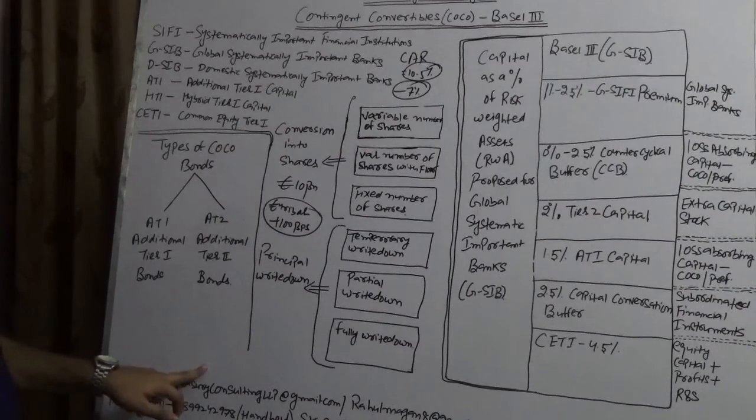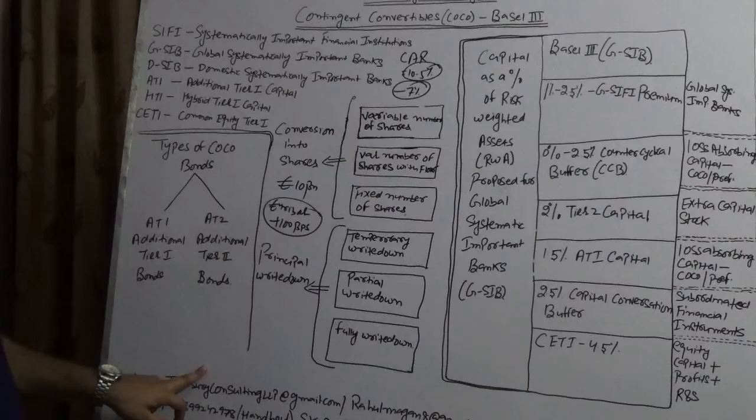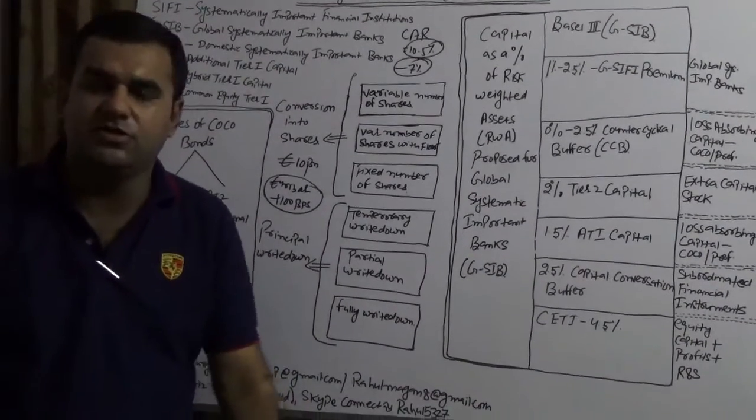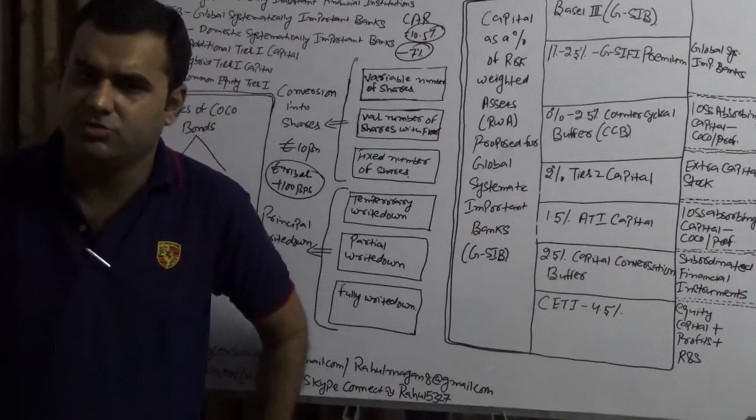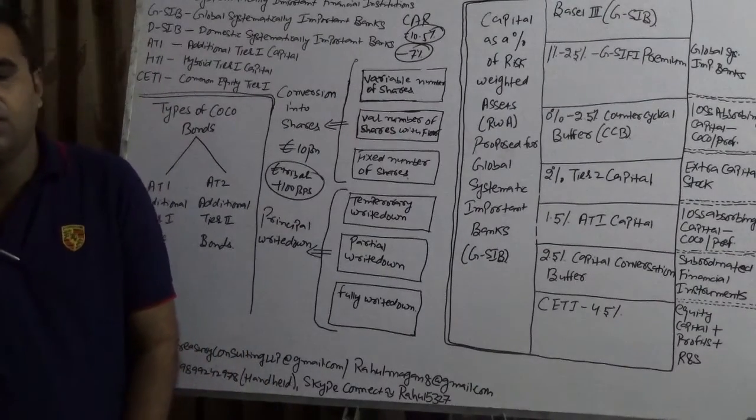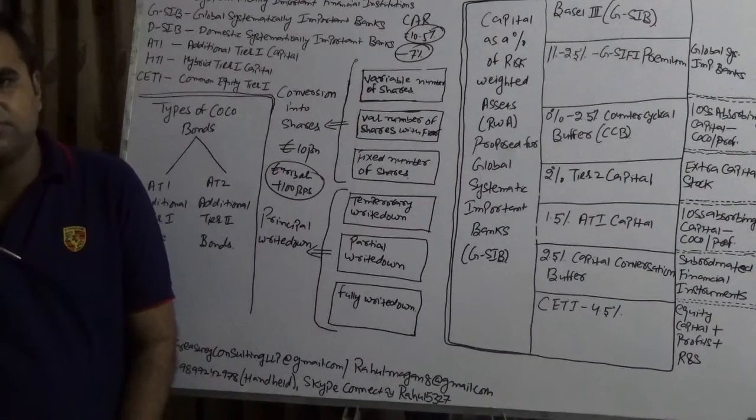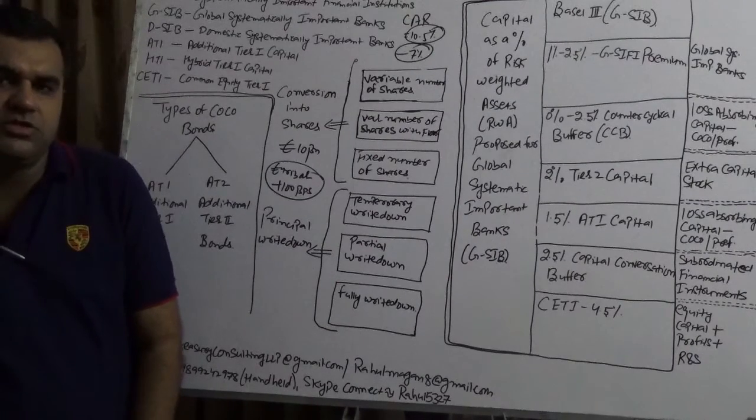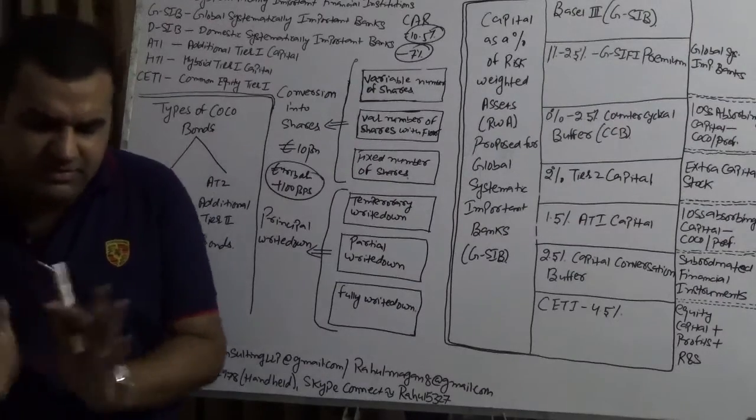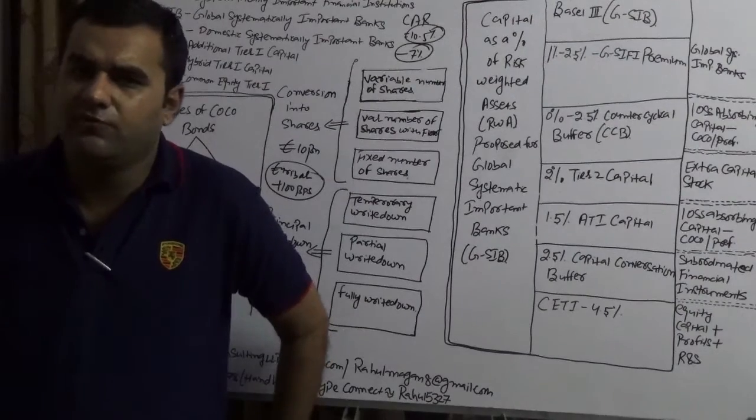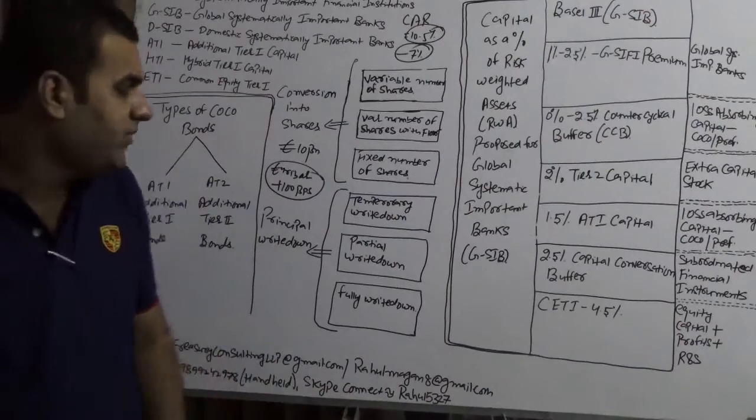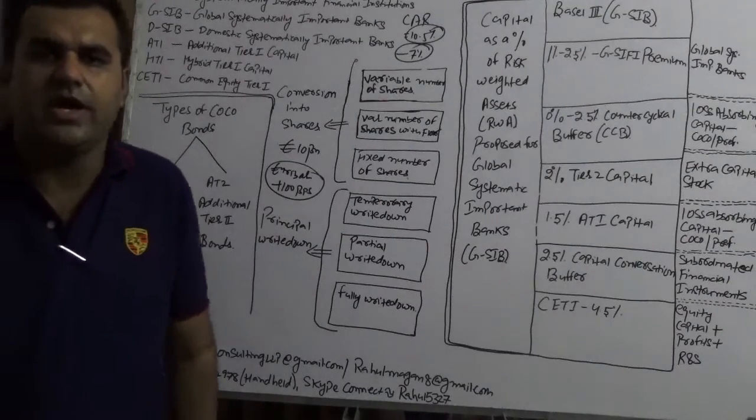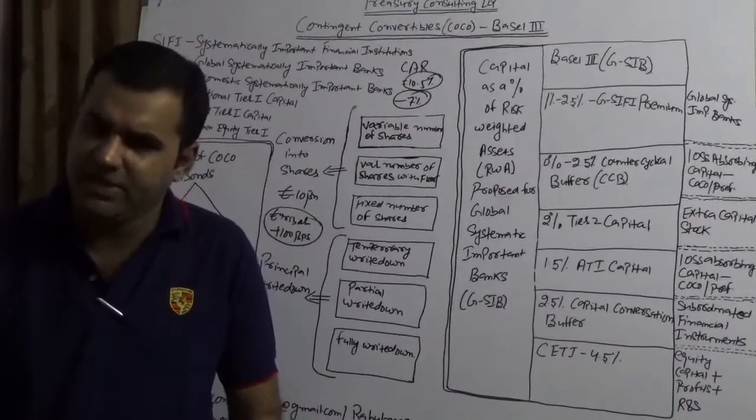You are always welcome to connect with us at treasuryconsultingllp@gmail.com, and our alternate email is rahulmagan8@gmail.com. My mobile number is 9899242978, and my Skype is rahul5327. We are very pleased to share that our website is almost on the way and probably by next week our website is coming. With this we are launching several things: CFO services, virtual auditor services, treasury merchandise store, treasury club which is the Mavericks, the GRC forum for global risk and compliance, and several things with Treasury Consulting LLP. We always thank you for giving us the confidence to do business in the market. In case you have any query, you are welcome to connect with us. Our magazine is coming probably by Monday or Tuesday for the September budget. We take your thank you and hope you like this video. More videos on contingent convertibles would be on the way. Thank you and have a great day.